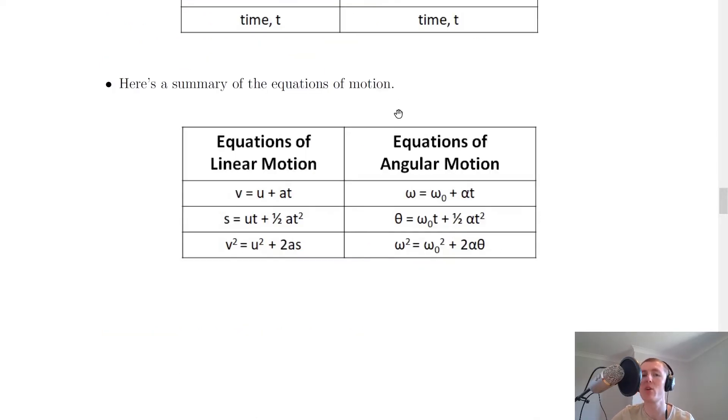And lastly here is a summary of the equations of motion using these variables. So we've got equations of linear motion here and equations of angular motion here. So you'll see that by comparing them side by side they're actually very similar.